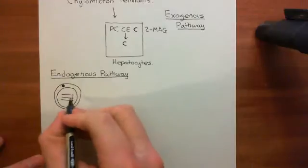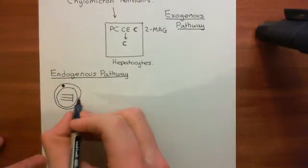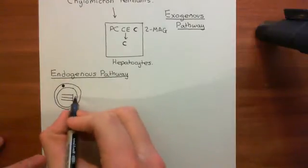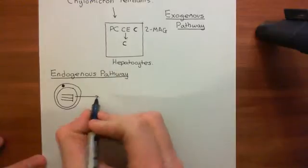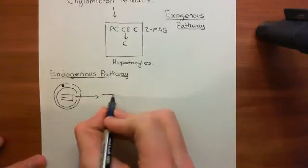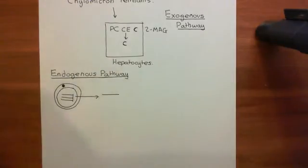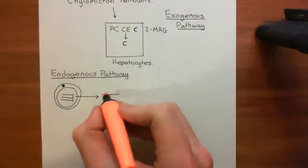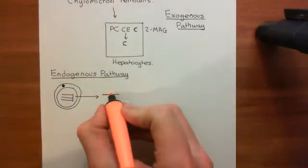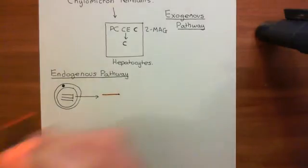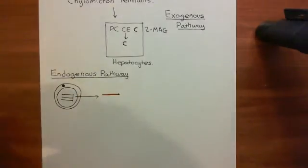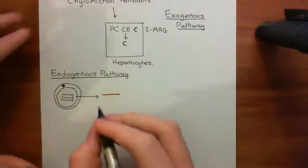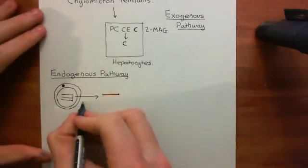In the fasted state, these adipocytes are going to start releasing free fatty acids into the blood. They release them directly into the blood — they don't have to put them into lipoproteins, they just release them directly into the blood.